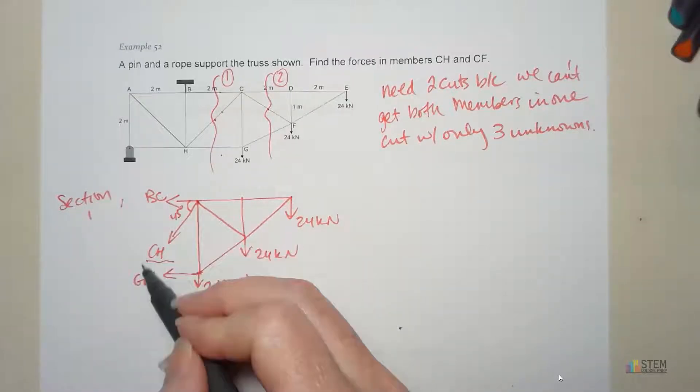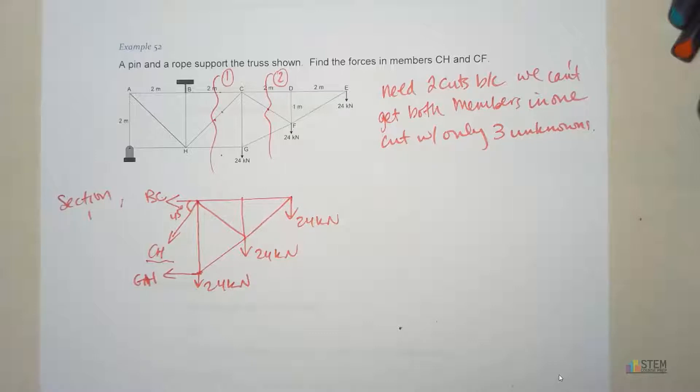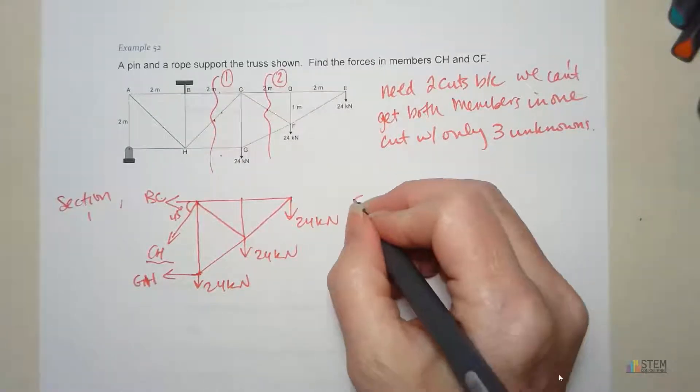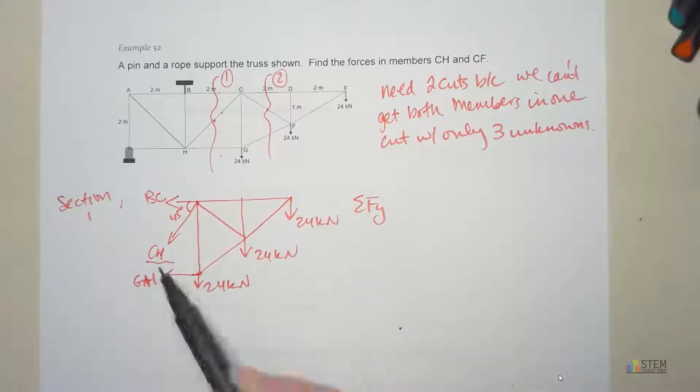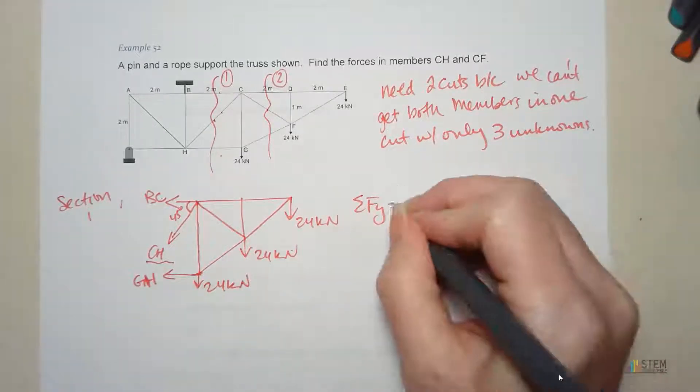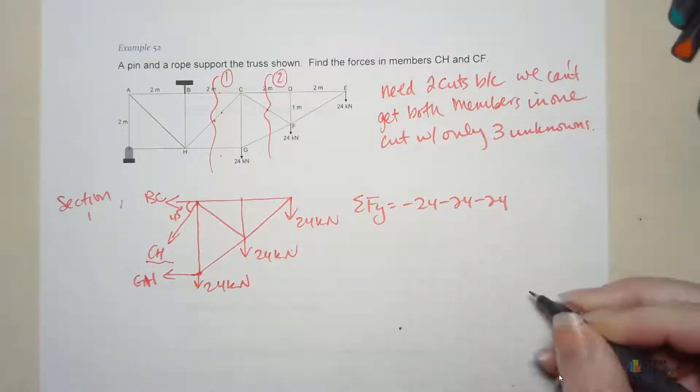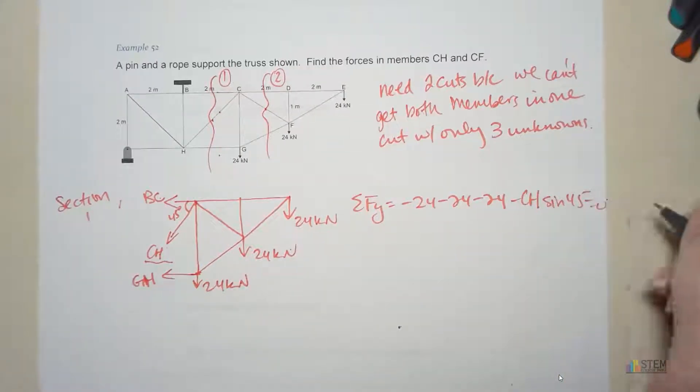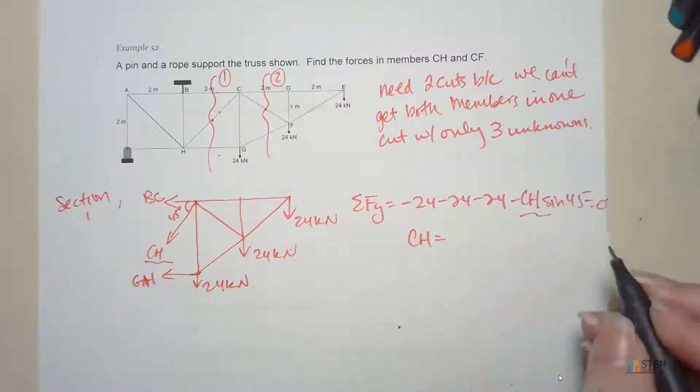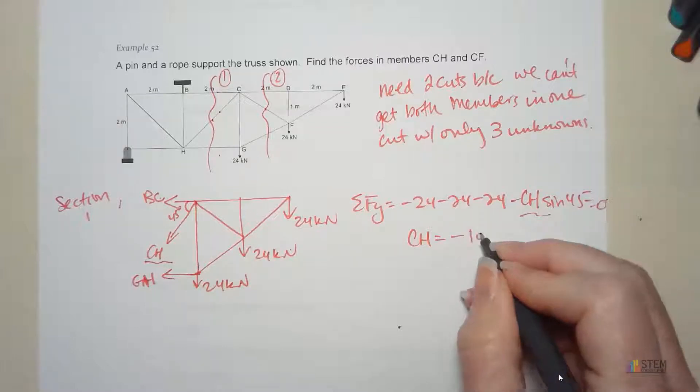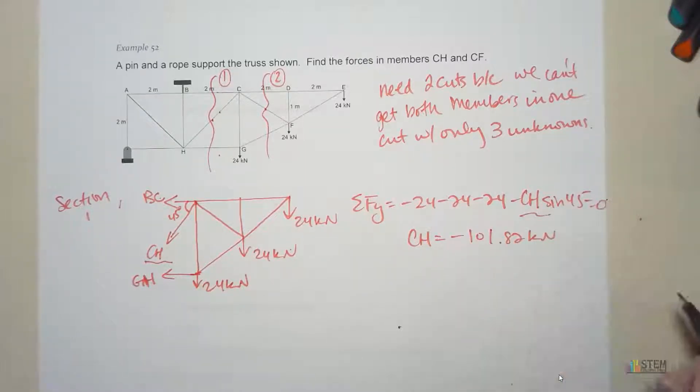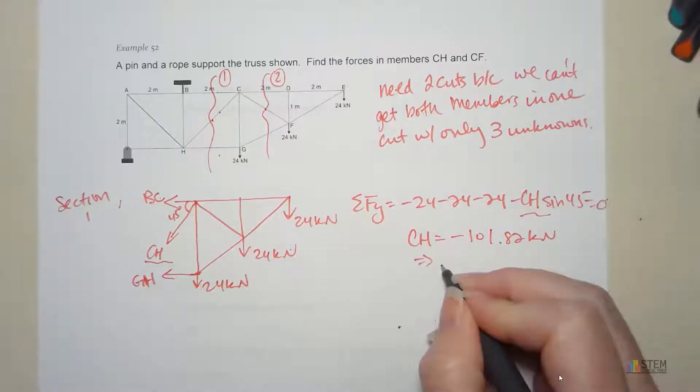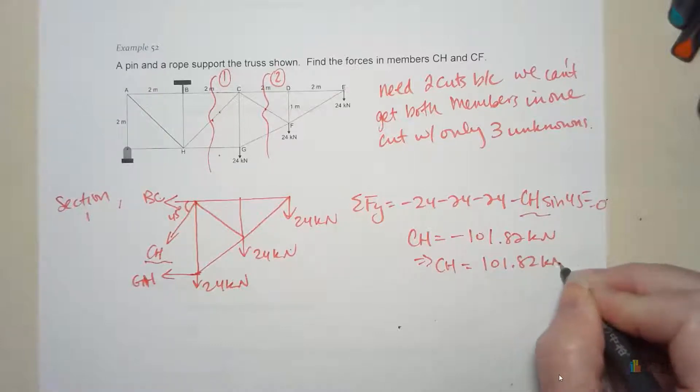Now we're just looking for CH. I don't care really about BC and GH. So can you think of a way to find CH with one equation? Hopefully you thought of the Y equation. All we need to do is sum up our forces in the Y direction. And that's going to give us CH. We've got these three negative 24s. And then we've got a negative CH sine 45. Set it equal to zero. Now our only unknown is CH. Convenient, right? So now we can find CH. And you do that, you get negative 101.82 kilonewtons. Now remember the negative indicates compression. So let's put CH is 101.82 kilonewtons in compression.